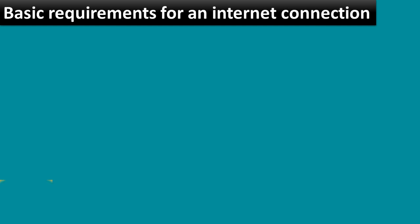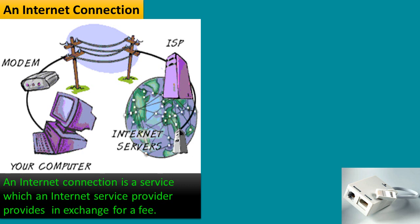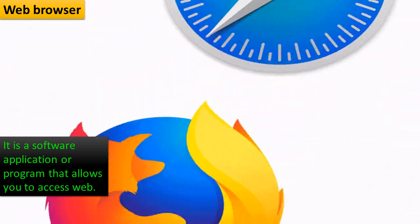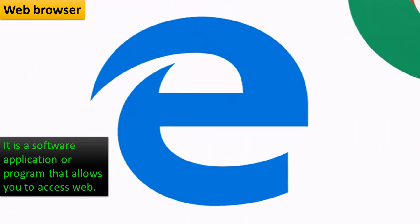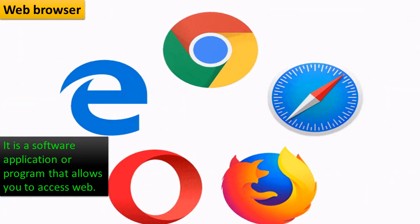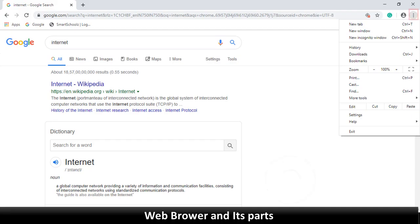To connect your computer with the internet you need some hardware and software. The first requirement is a modem. Depending upon the choice and preferences, a user can have an external, internal, or PC card modem. The speed of a modem is measured in bps. An internet connection is a service which an internet service provider provides in exchange for a fee. The next requirement is a telephone line, which is used to connect the computer to an internet service provider. A web browser is a software application or program that allows you to access the web. Google Chrome is one of the most popular and widely used web browsers, developed by Google. Some other well-known web browsers are Mozilla Firefox, Apple Safari, and Internet Explorer.